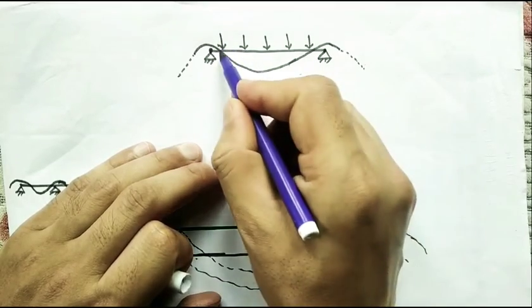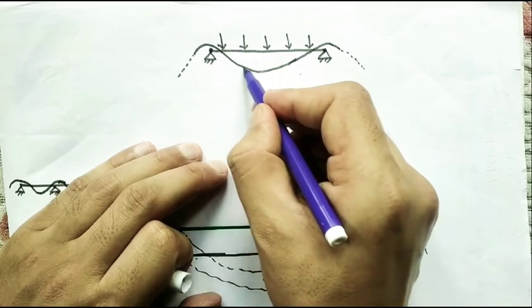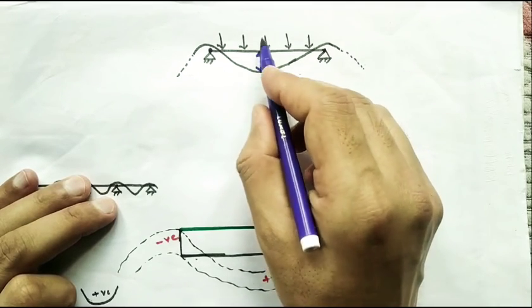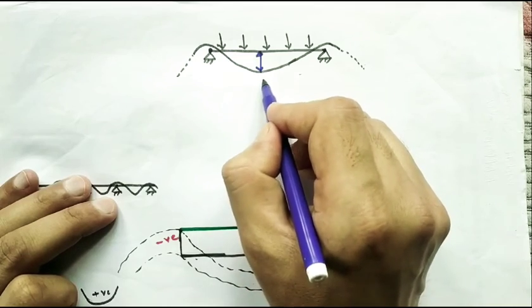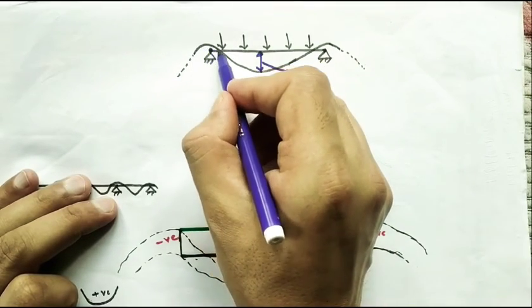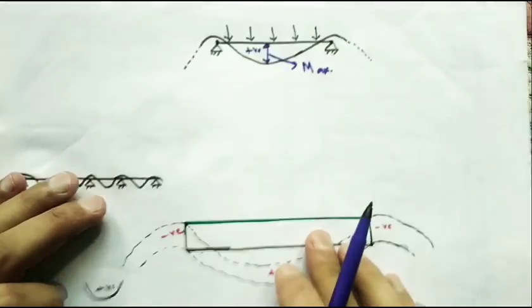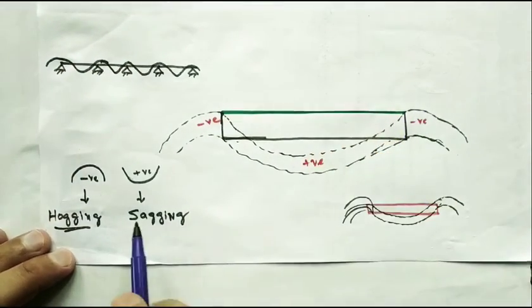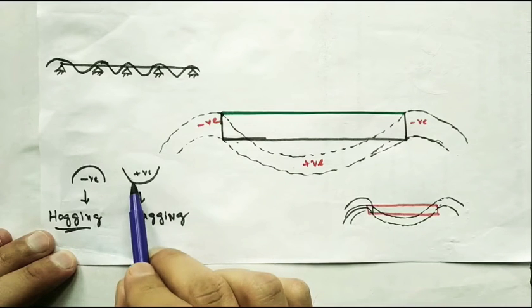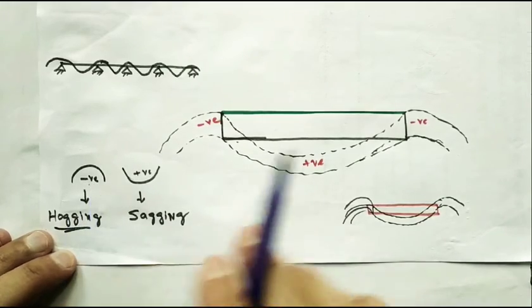This bend — exactly this bend — maximum bending moment is generated at the mid of span. This span length L has maximum bending moment at mid-span, and here the bending moment is generated. So you can understand positive bending moment and negative bending moment. When bending is like this — we say sagging — we say positive bending moment. And in the hogging case, we say negative bending moment.